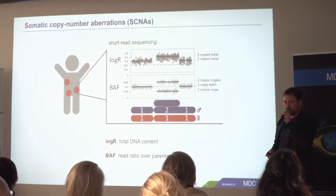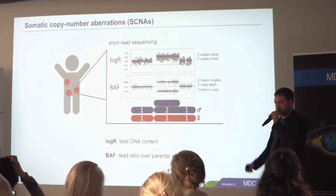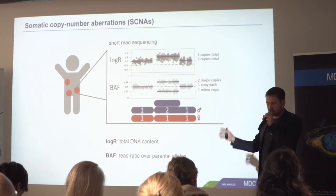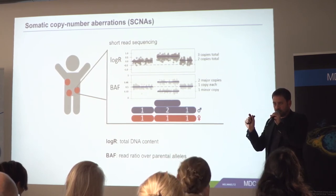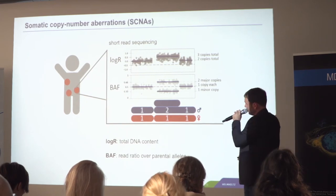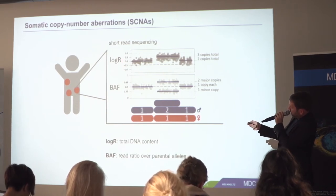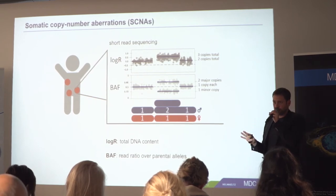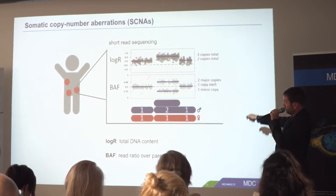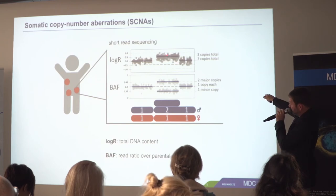How can we measure this? We use next-generation sequencing — one of these sequencing machines — to read out very short parts of the genome, typically the whole genome, all three billion bases. We compare them to the reference genome originally sequenced by the Human Genome Project. One readout, called the log R, is the total amount of DNA at a certain position compared to normal tissue. If it's zero, it's the same amount as the reference; above zero means a copy number increase or amplification; below zero means a deletion.